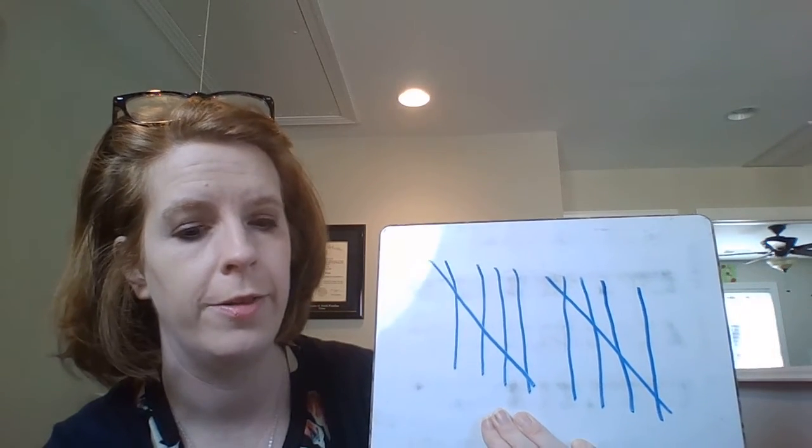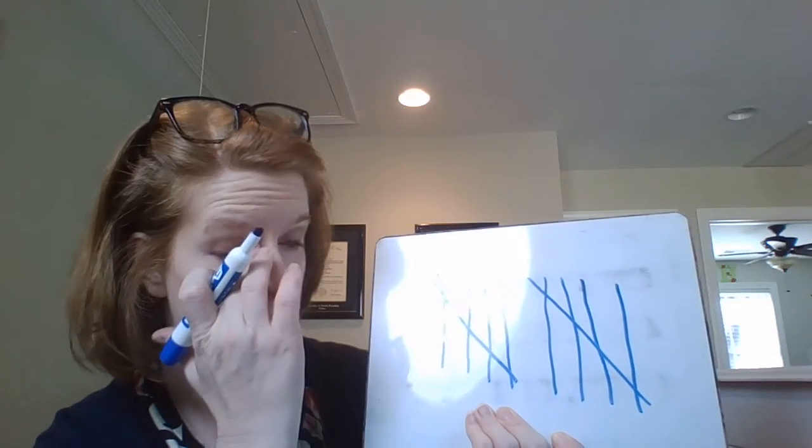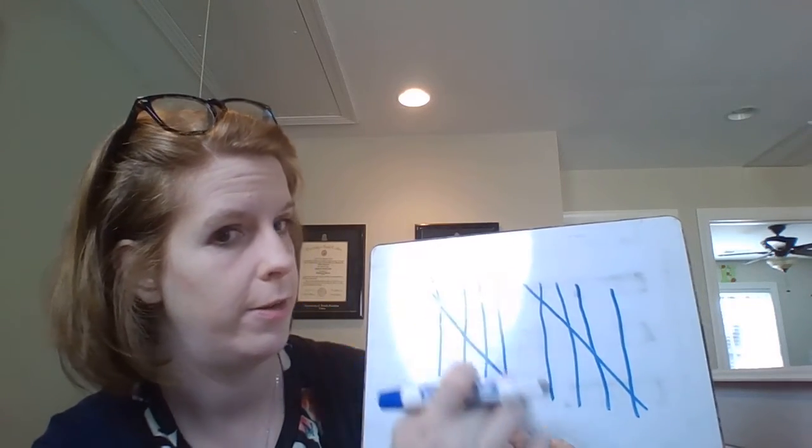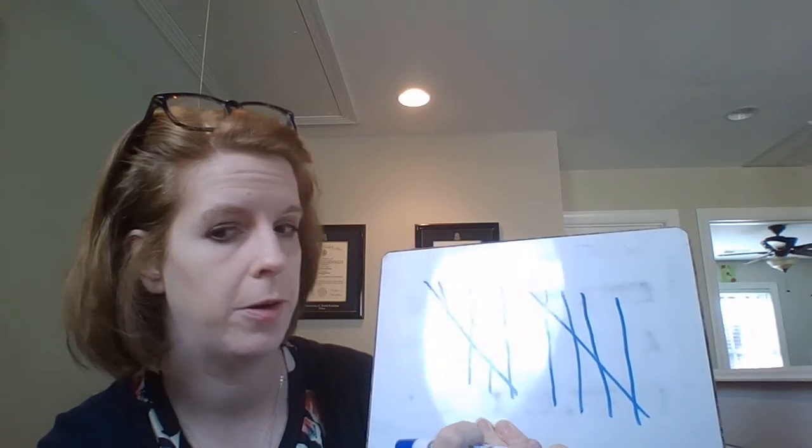All right. So practice your tally marks today. Remember, you draw up to four lines and then on the fifth one, you draw a line across. And this is how our robots count. And we're going to practice on the slides below. I will have numbers and tally marks for you to practice up to five. Send me a picture of your tally marks today.